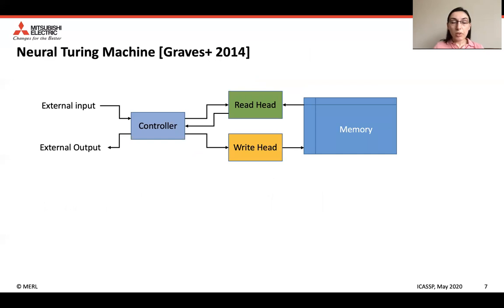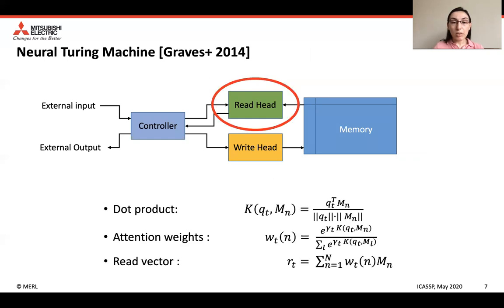Here is the architecture for the neural Turing machine. It consists of a controller, a memory, and a read and a write head. The controller controls the input-output as well as the heads. The read head reads from the memory and the write head writes to the memory. In this work, we focus on the read operation. The read head produces a query vector Qt, takes the dot product between this vector and the memory items, and then computes attention weights to determine a weighted sum of the memory items to get the read vector denoted by RT.